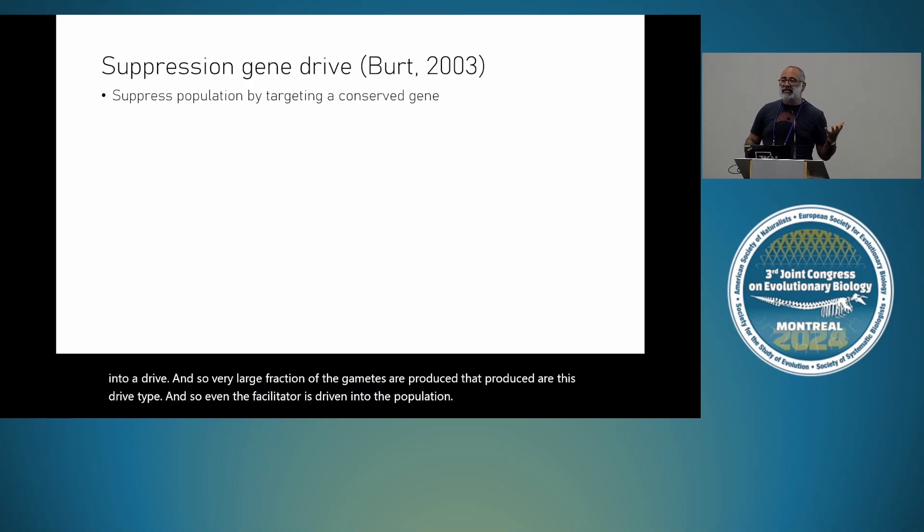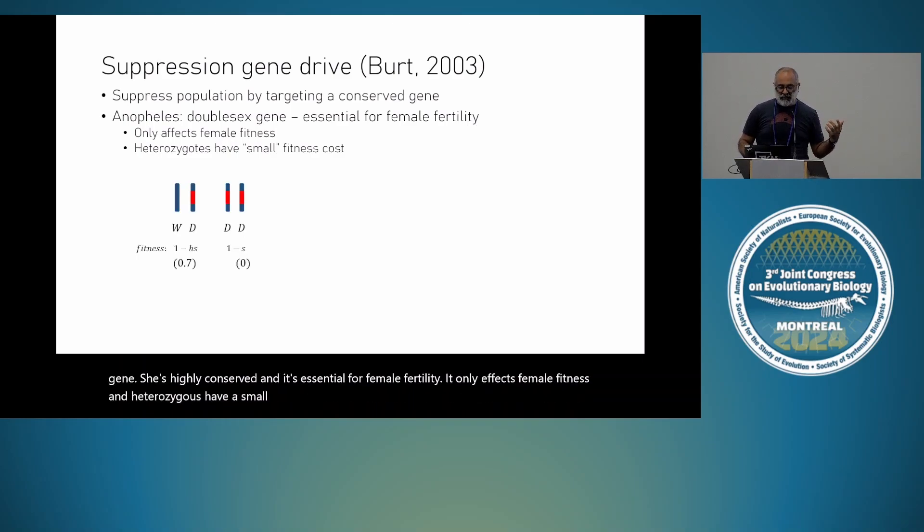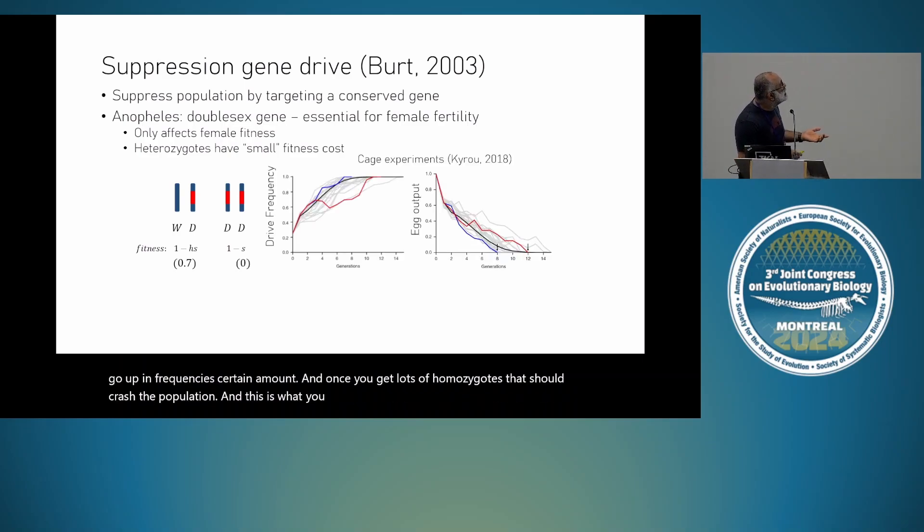The idea is to then drive this into a very conserved gene, which is very important for the organism. So Anopheles gambiae, one of the carriers of malaria in sub-Saharan Africa, there's a double-sex gene, which is highly conserved, and it's essential for female fertility. The heterozygotes have a small fitness cost, and that's important because if the heterozygotes have a small fitness cost, it can allow it to penetrate into the population and go up in frequency. And once you get lots of homozygotes, that should crash the population. And this is what you see in cage experiments here. This is drive frequency versus generations, and it goes up in frequency. At the same time, the egg output goes down and the population crashes.